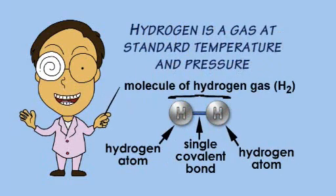At standard temperatures and pressures, the element hydrogen exists as the gas H2, made up of two hydrogen atoms joined together by a single covalent bond.